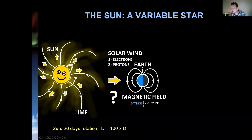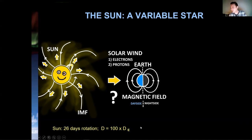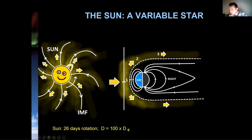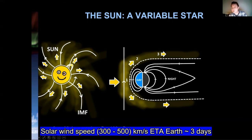Also notice that the interplanetary magnetic field — the magnetic field of the sun — is either pointing downwards or upwards. This effect is very important when it comes to what happens when this solar wind hits Earth. Luckily, Earth also has a magnetic field formed like a dipole.